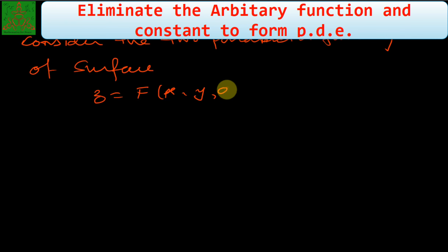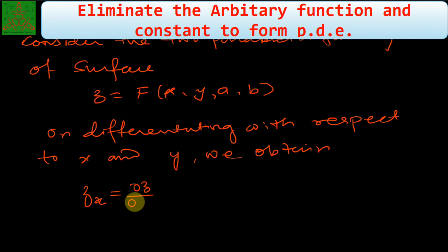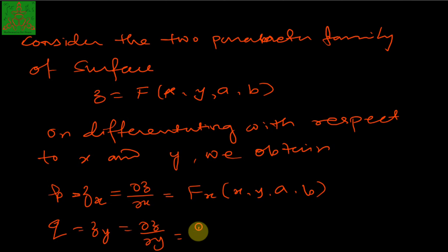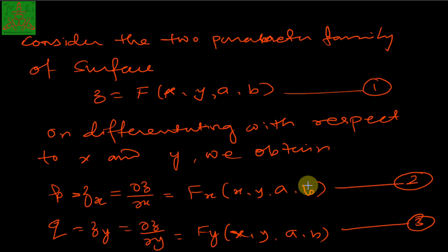On differentiating this parameter family with respect to x and y, we obtain z_x, that is ∂z/∂x, denoted as p, equal to f_x(x, y, a, b), and q, denoted as z_y = ∂z/∂y = f_y(x, y, a, b). Here a and b are the arbitrary constants. These are equations 1, 2, and 3, and we have to solve them to get the values of a and b and eliminate them to obtain a and b in terms of x, y, p, and q.